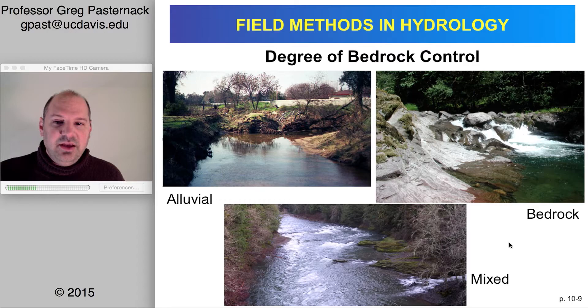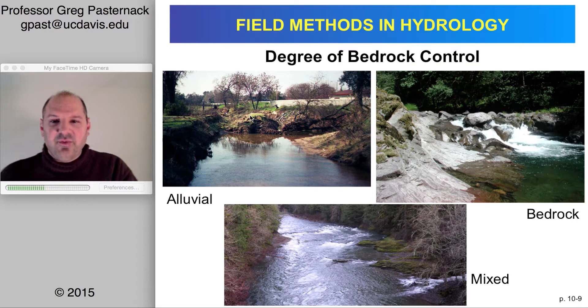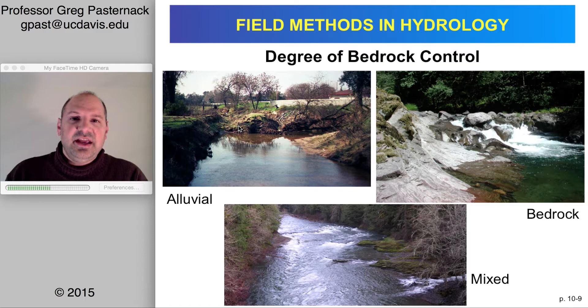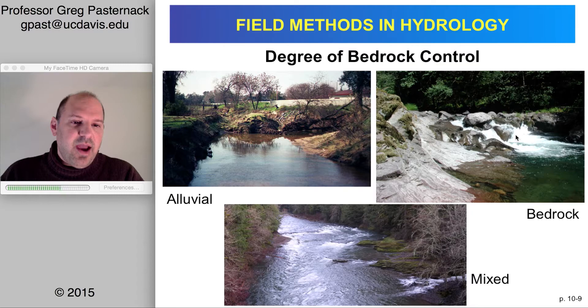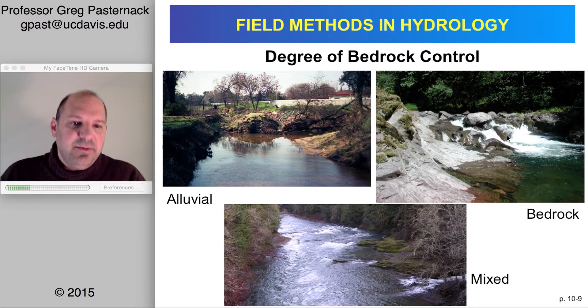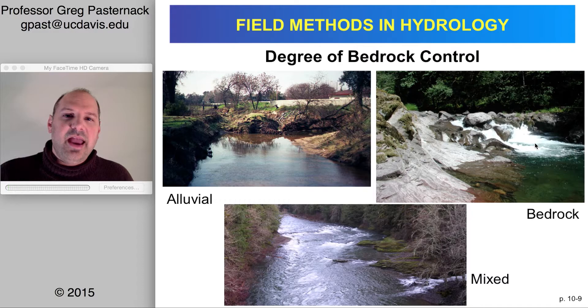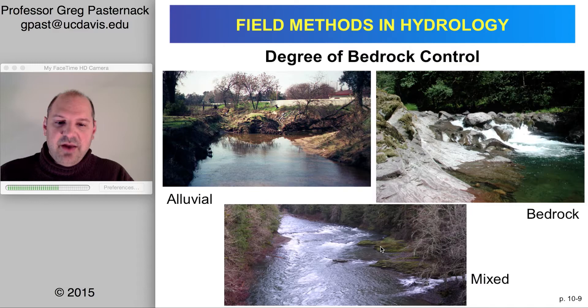Regarding bedrock control: an alluvial river shows signs of bank collapse and channel adjustment over relatively short periods during small floods — the water can adjust the banks. A purely bedrock river has unique erosional features like potholes and flutes, and where the flow goes is strongly determined by the bedrock, which changes only over long periods through slope-driven processes. There can also be a mixed condition with both bedrock outcrops and alluvial sediment defining channel conditions.